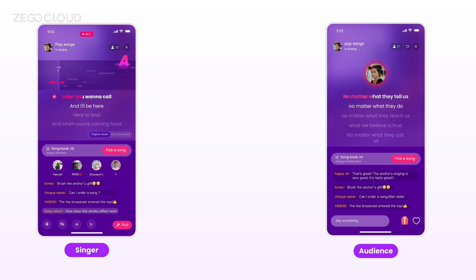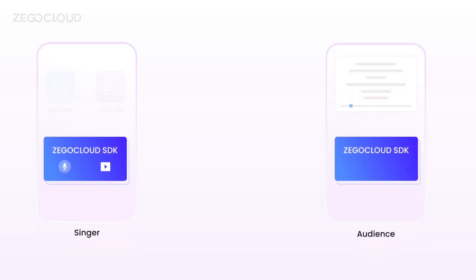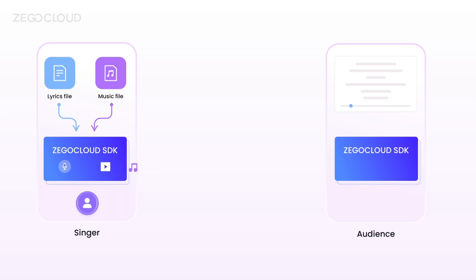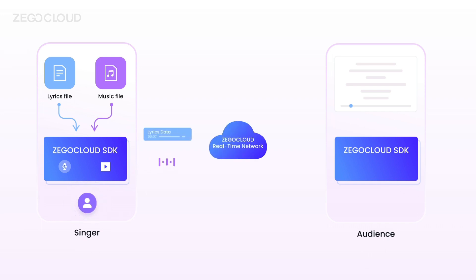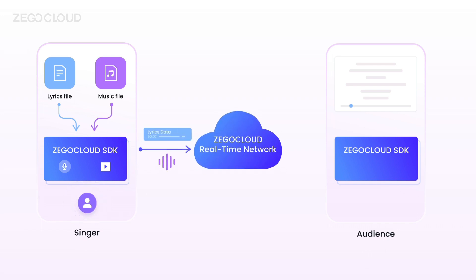Let's explore how the vocal reaches the audience. The singer downloads the lyrics and accompaniment, and then the ZeeGoCloud SDK plays the accompaniment while collecting the singer's voice. Then the singer's voice, accompaniment, and lyrics are mixed into a single stream, which is synchronized to the audience through the real-time network.